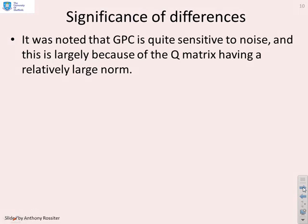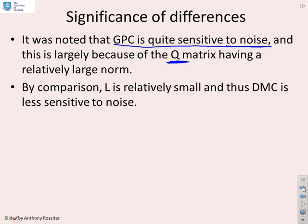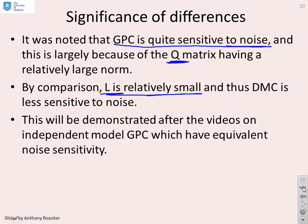What's the significance of these differences? Well, it was noted that GPC was quite sensitive to noise, and that's why we had those videos on the T filter, and that was because the Q matrix had quite a large norm. So there was a large mapping from the outputs, and therefore from the noise through to the predictions. By comparison with Q, L is relatively small, and thus DMC is actually less sensitive to noise than GPC. Now, we'll demonstrate that after the videos on independent model GPC, which comes next, because independent model GPC has the same noise sensitivity as DMC.